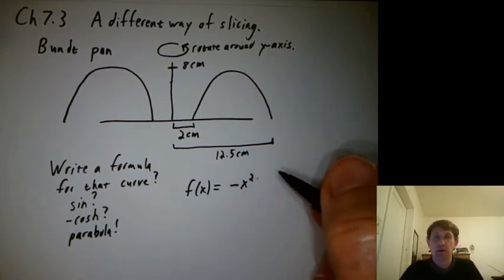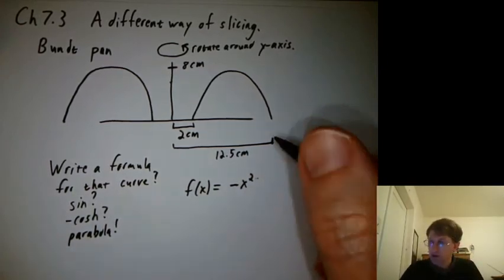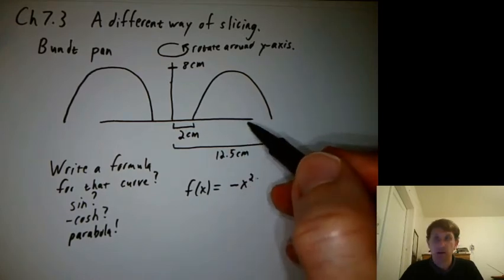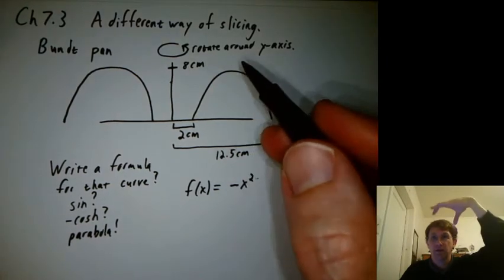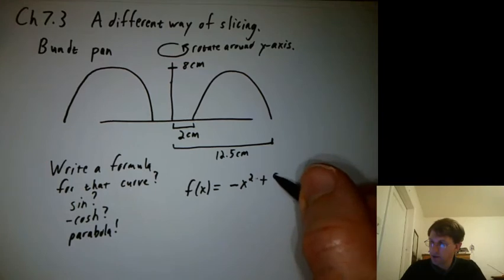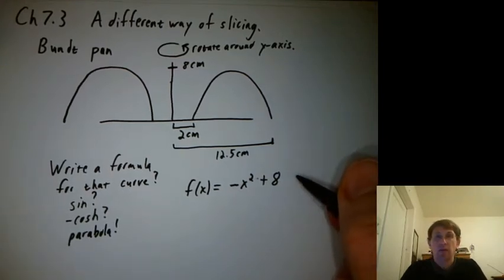We want an upside down parabola. So they said, let's put a minus on it. Sounds reasonable. And then they said, oh, that would be focused down here, but we want it to be shifted up. So the peak of the parabola is at 8 vertically. So they said plus 8. What do you think of that?